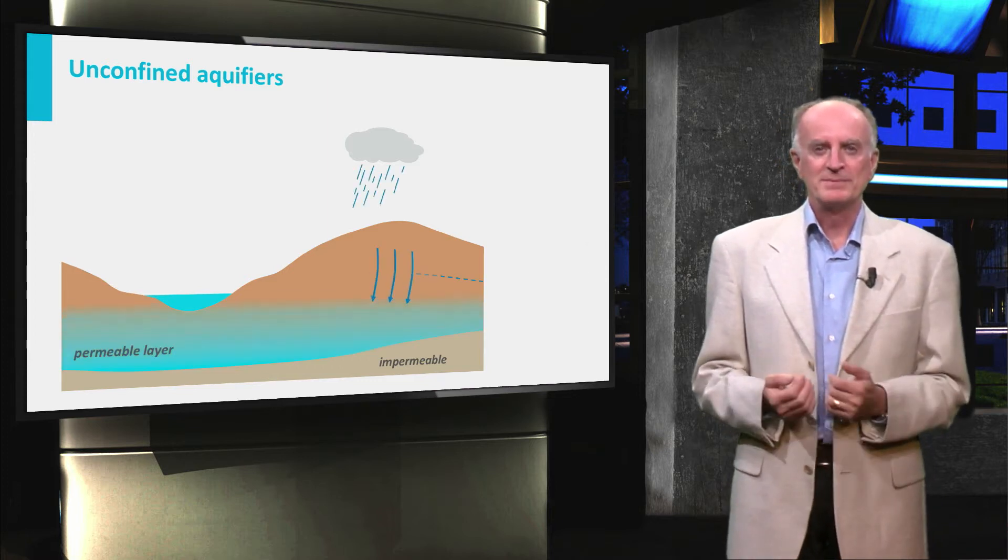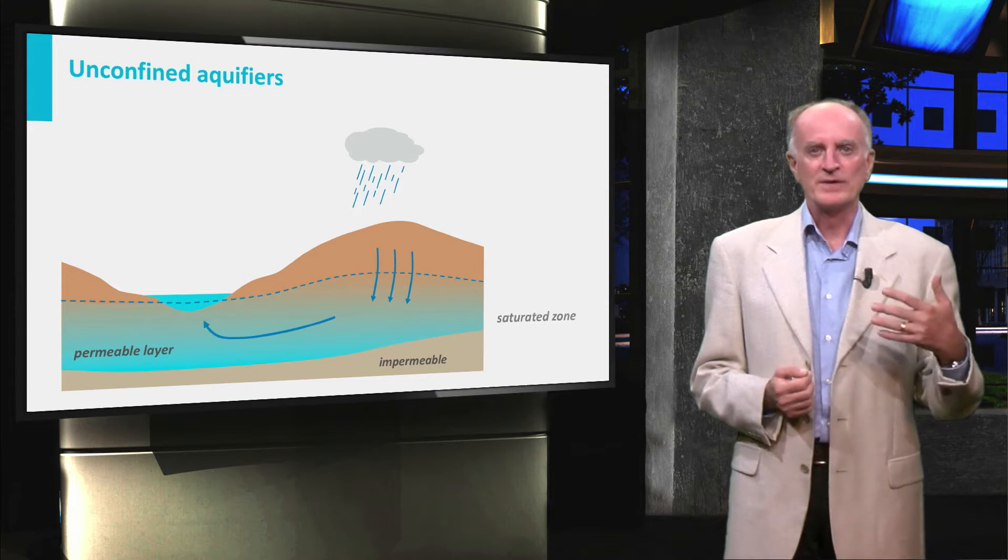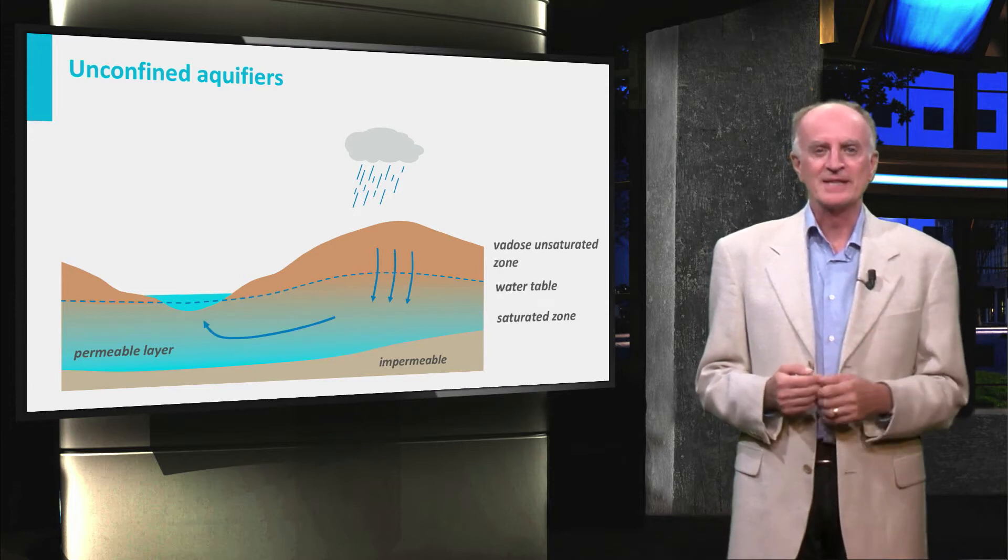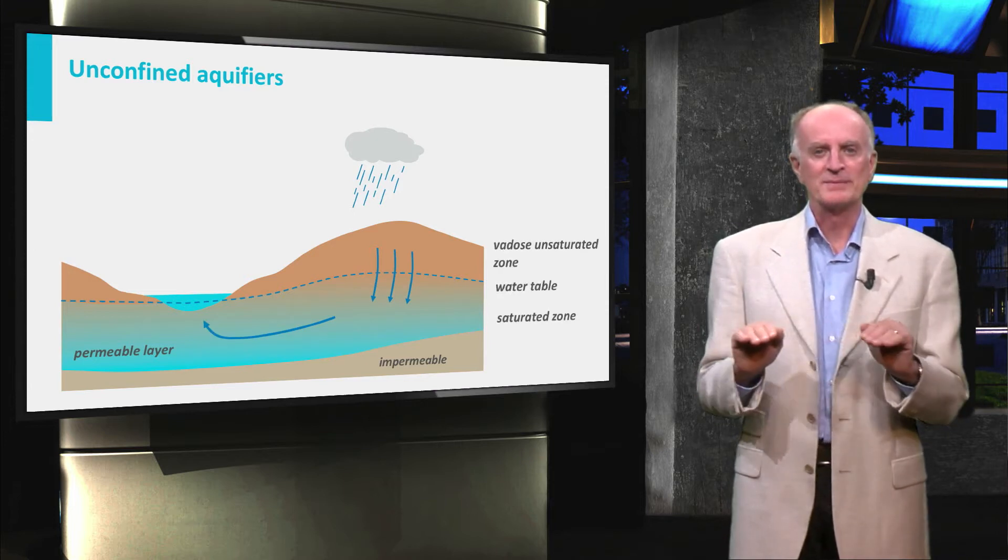With the onset of precipitation, you see the water flowing downward and laterally, and the resulting water table situated in the permeable layer.